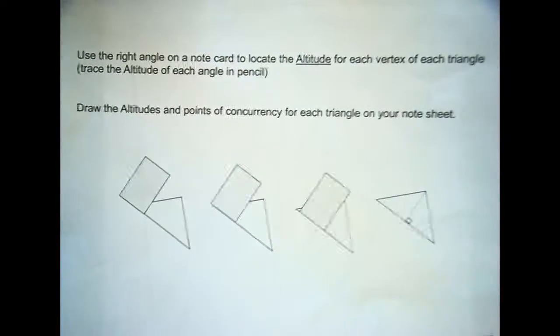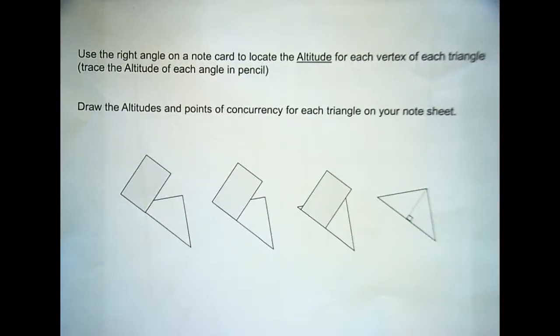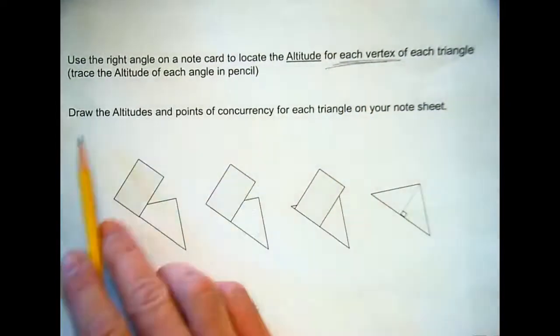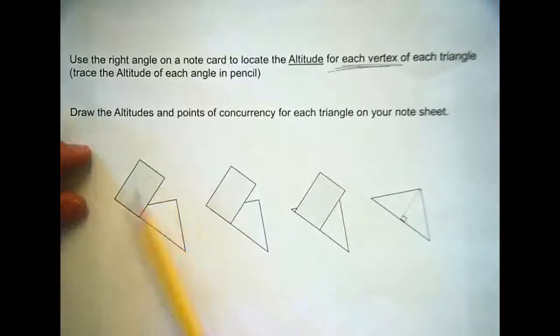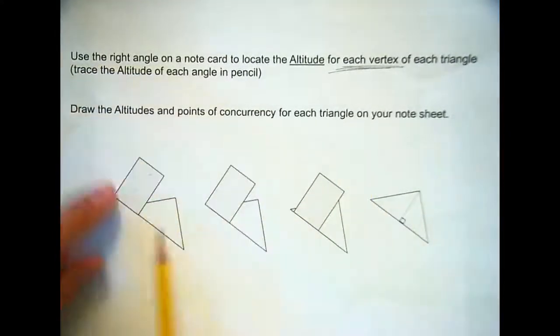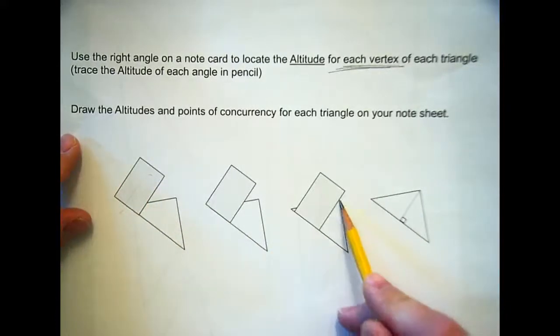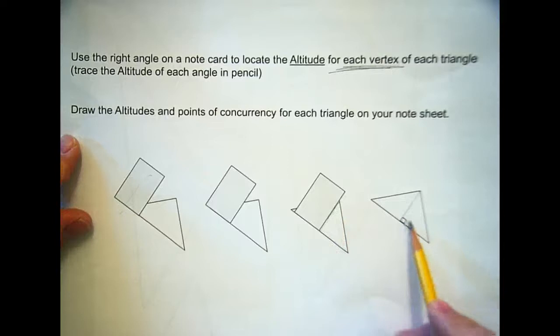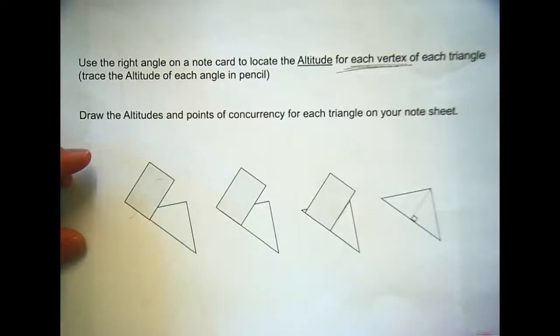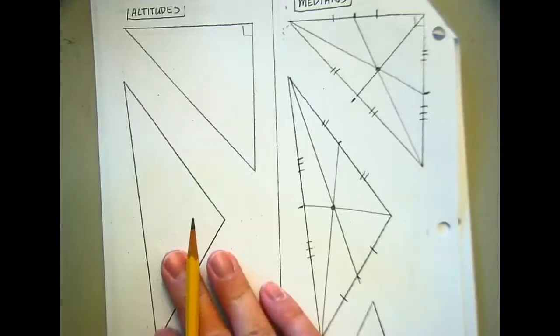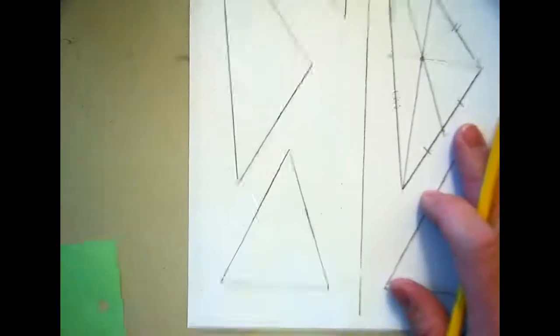So the way we're going to go through this, first we're going to take our note card and let me actually put up a picture of what we're doing. I think it's a pretty good progression. We're going to use the right angle from our note card to locate the altitude. Now remember yesterday we talked about the altitude as being a height. We're going to go the height from each vertex. So it's from each vertex. And then we're going to trace it.